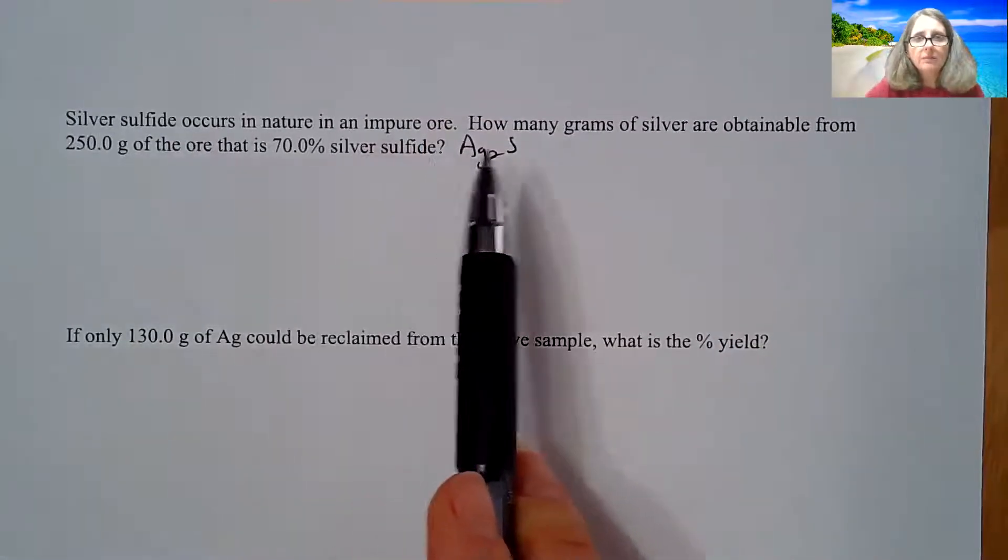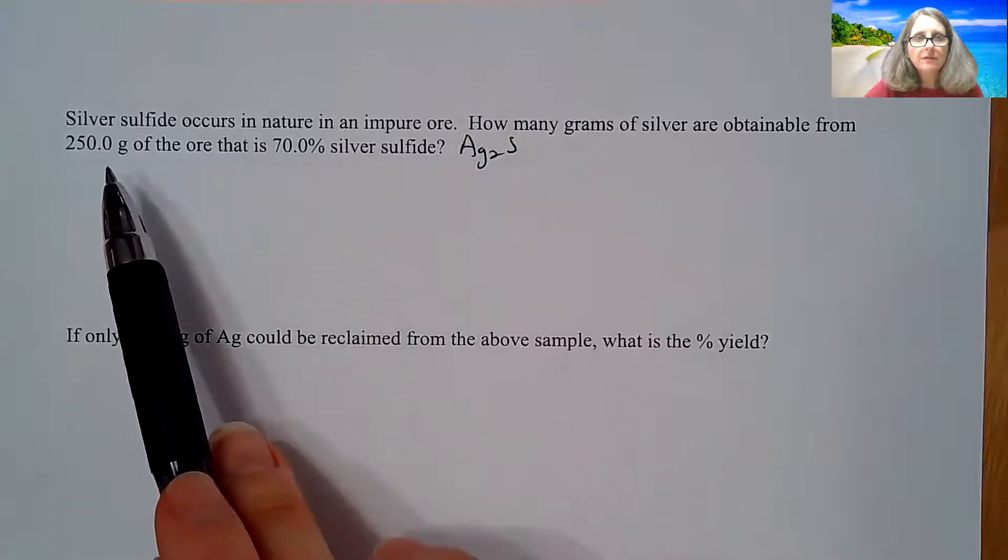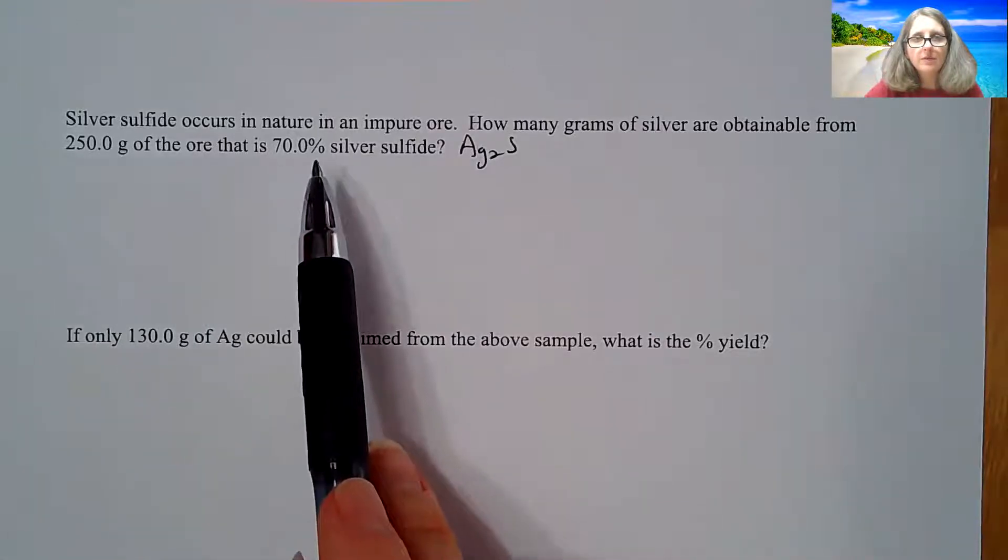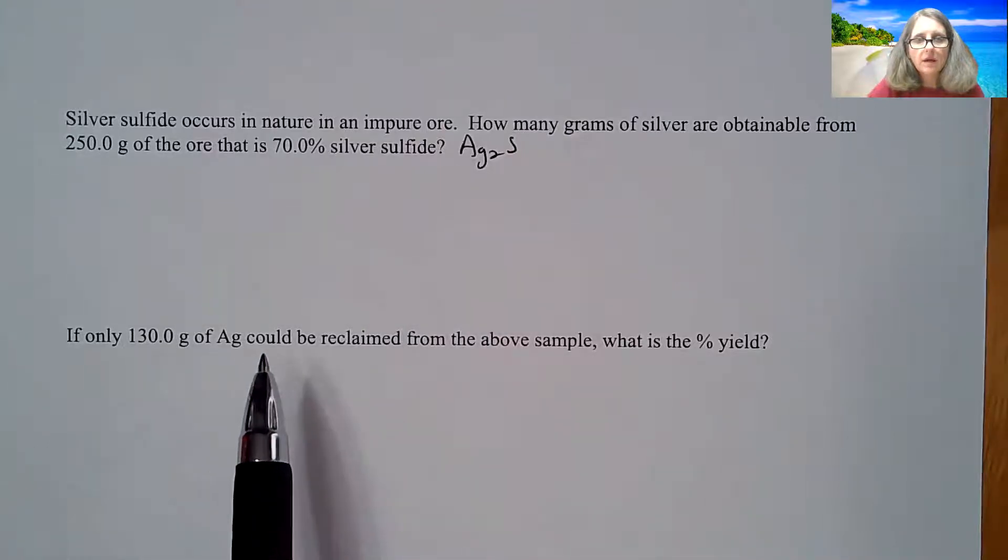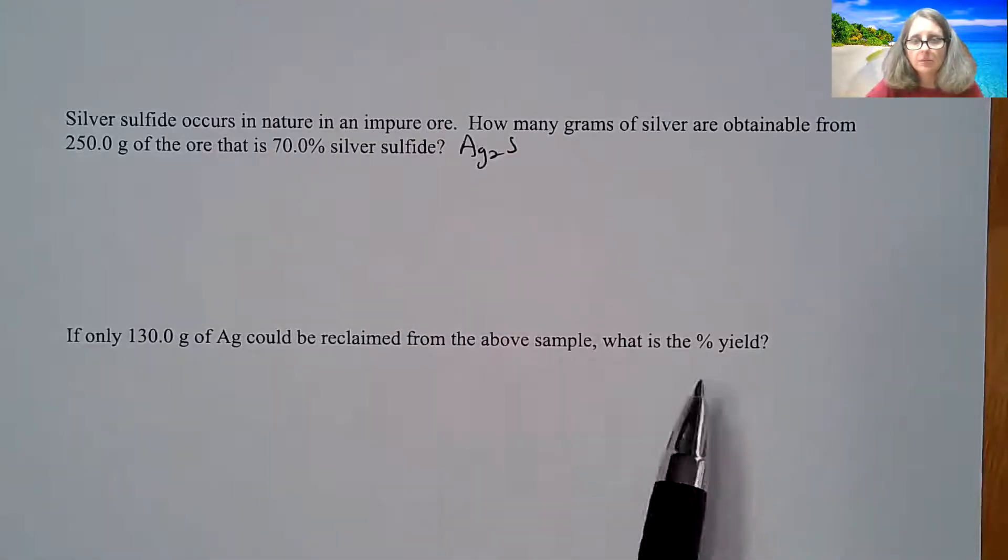If I have it in an impure ore, how many grams of silver are obtainable from 250 grams of the ore? 70% of it is this compound. And then if only 130 grams of silver could be reclaimed, what is the percent yield?